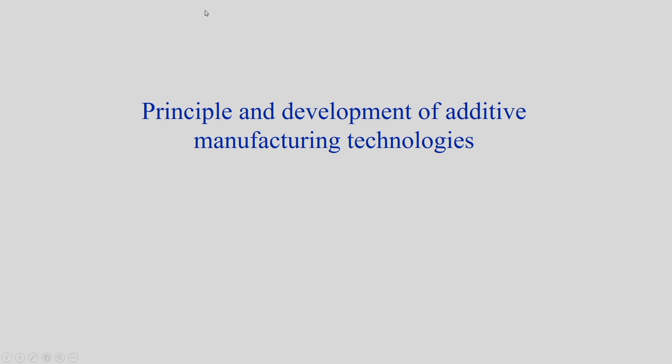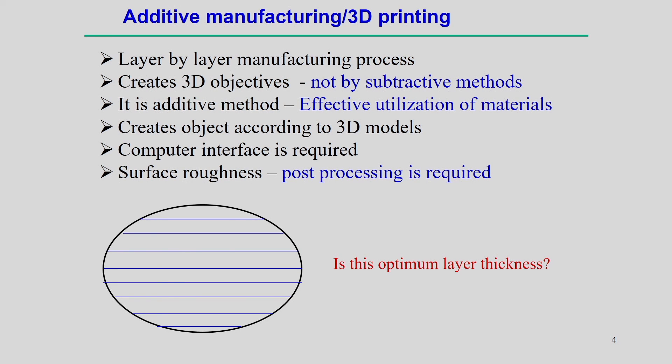First, let us look into the principle and development of additive manufacturing technologies to gain some idea about this technology. Simply, additive manufacturing — sometimes called 3D printing — is a kind of layer-by-layer deposition process associated with some sort of material transfer. The first step is to create a 3D object using some CAD software, where we create the object according to the desired shape we want to manufacture.